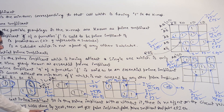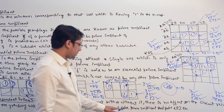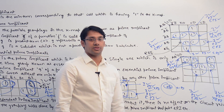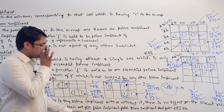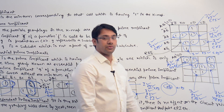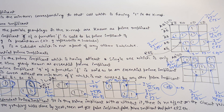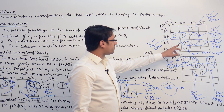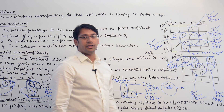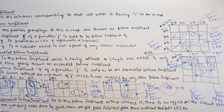Next is the redundant prime implicant — it is a prime implicant where, with or without it, there is no effect on the resultant circuit. For example, the biggest subcube here — we can ignore it because even if you don't use it, the solution equation will not be affected, so this one is a redundant prime implicant. Note: if the grouping is done by zeros, then we get a false implicant, false prime implicant, as well as false essential prime implicant. So let us try to analyze why this one is a redundant prime implicant and why without it we can still get a correct solution.